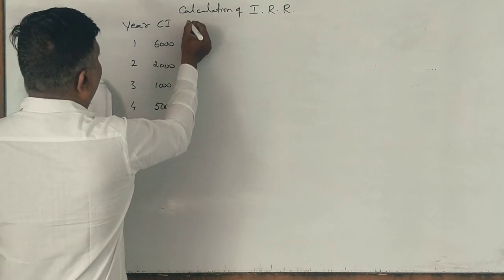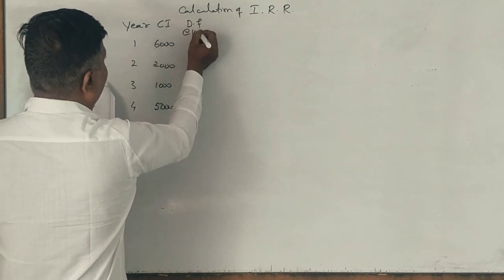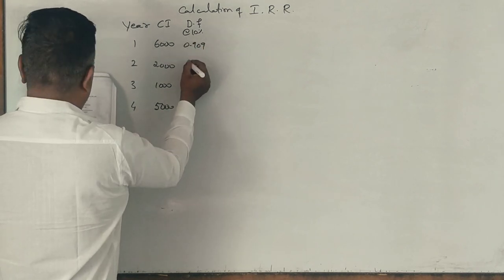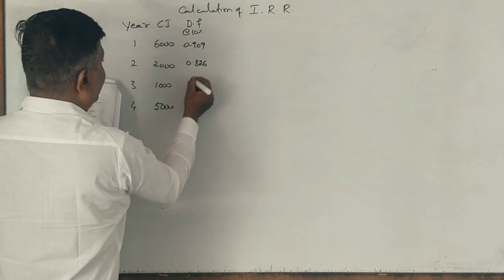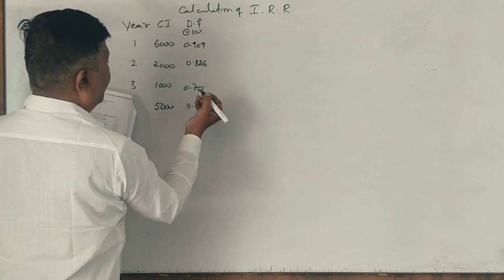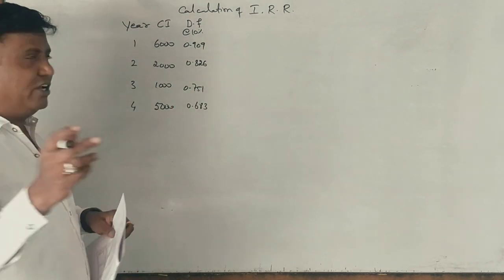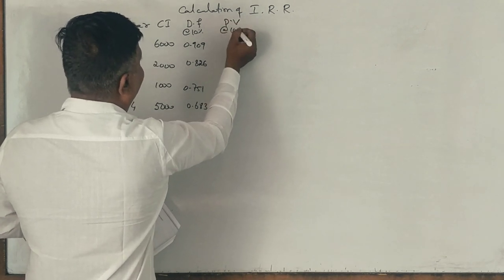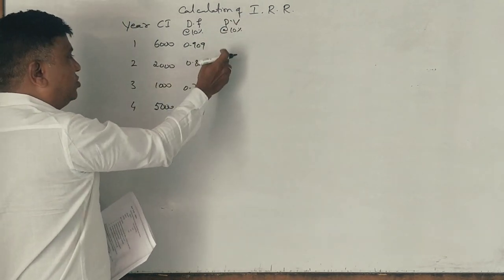Now, what is the discount factor at 10% is given? It is 0.909, 0.826, 0.751, 0.683. Right? Now, take your calculators. Present value at 10%. Multiply these two and tell me.